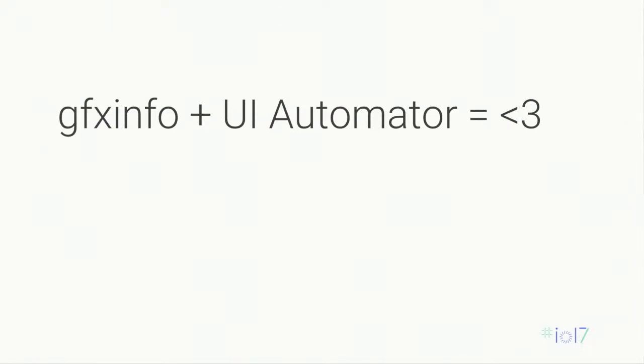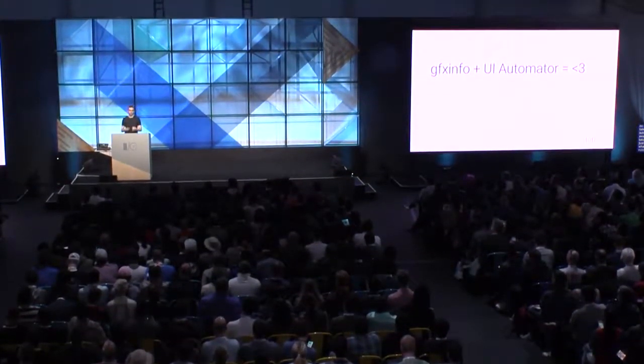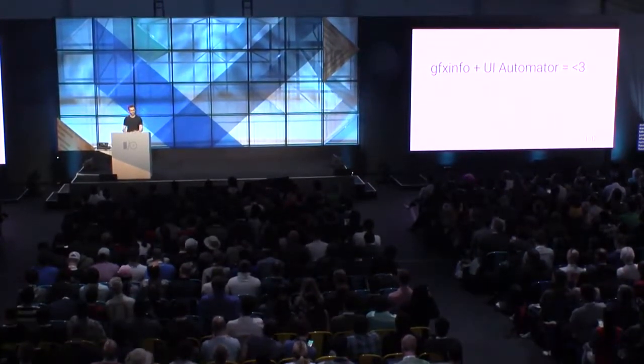It doesn't tell you why your app ran slow or what you should do to fix it. But you can automate it. If you take one thing away from this talk, just run GFXinfo at the very end of whatever automated test you're running. Now you have a performance test — something you can run regressions on, spot regressions in your application. This is how most of the internal Android jank tests work and how we track all jank across the system. It's incredibly useful. Please just do it.